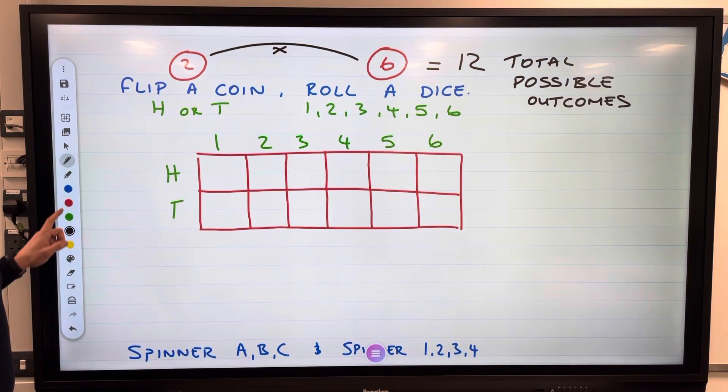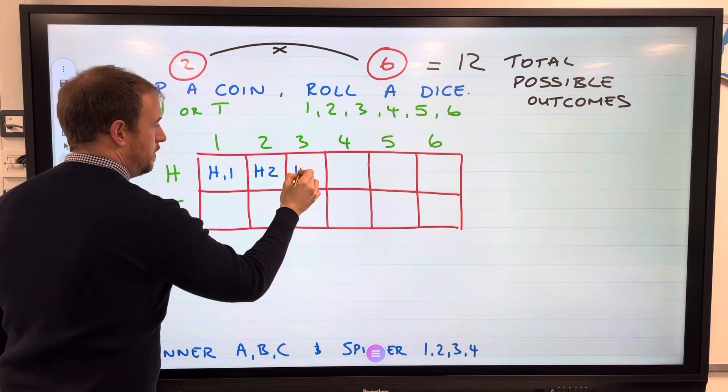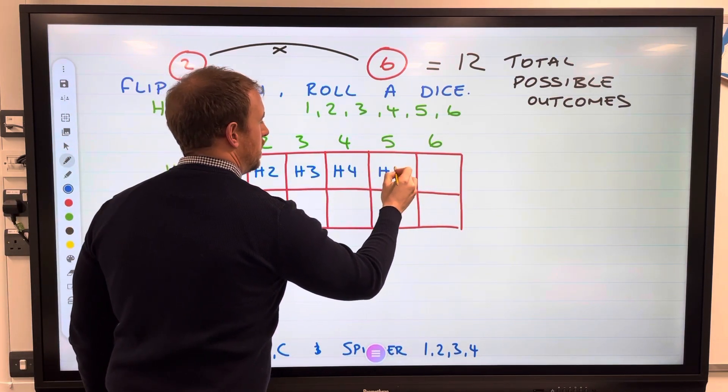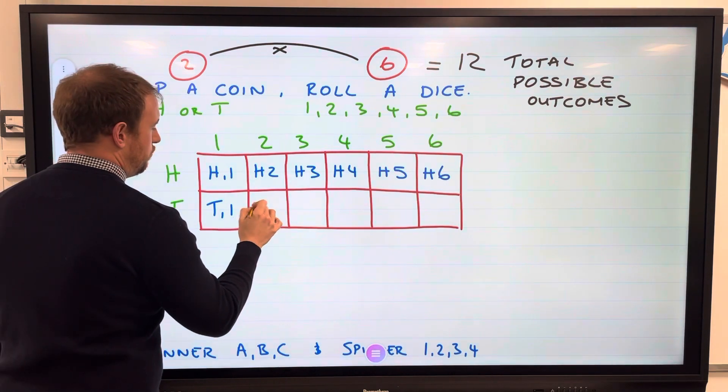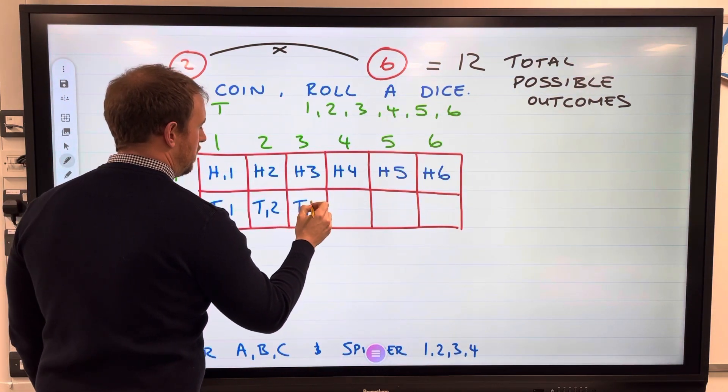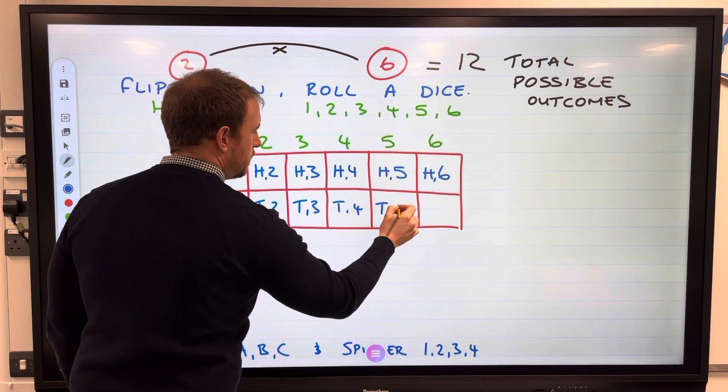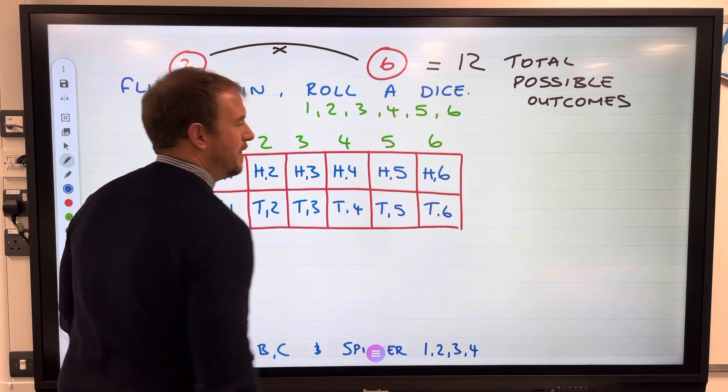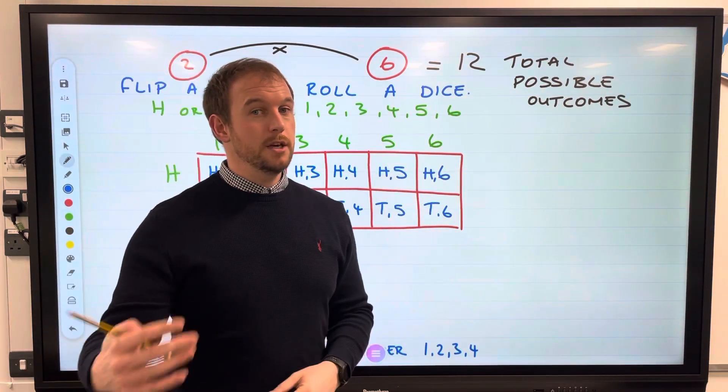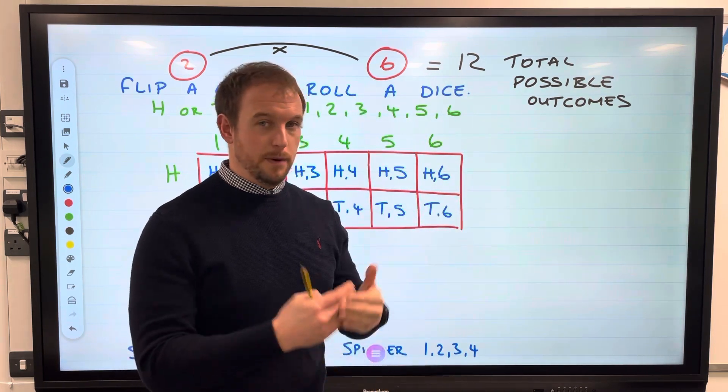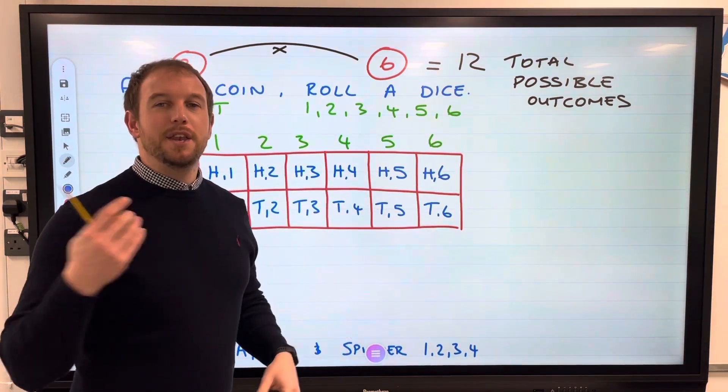Let's use this blue pen. We're going to have head and one, head two, H three. You can see you're just following the pattern because these are the different outcomes we could have when flipping a coin and rolling a dice. That's the easy bit. You get a mark, maybe even two marks, just for doing that. If you can train your brain whenever you need to list possible outcomes, draw a table.